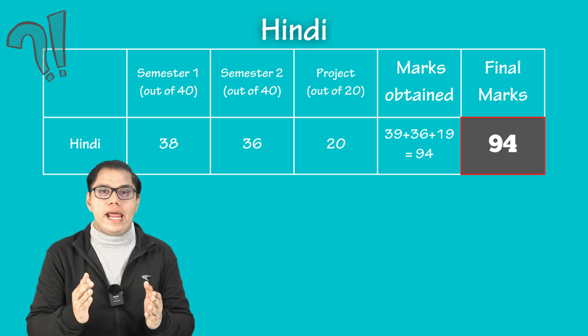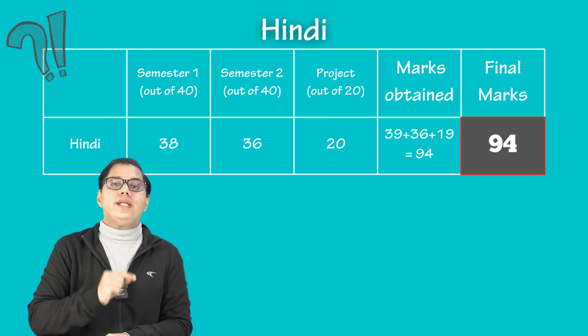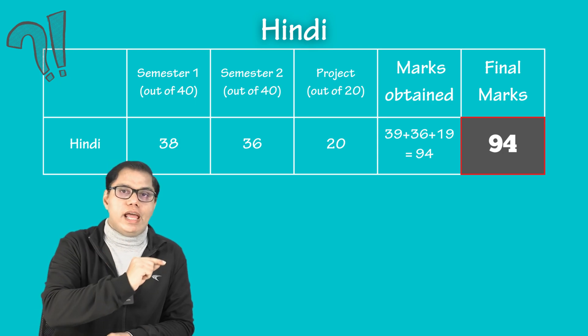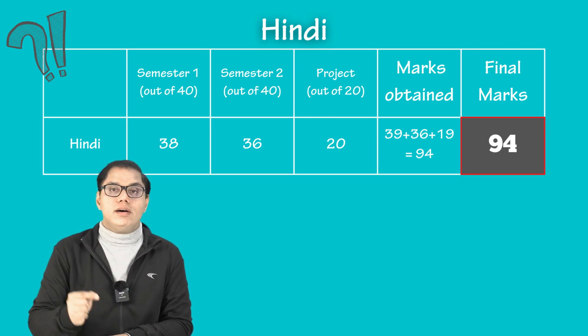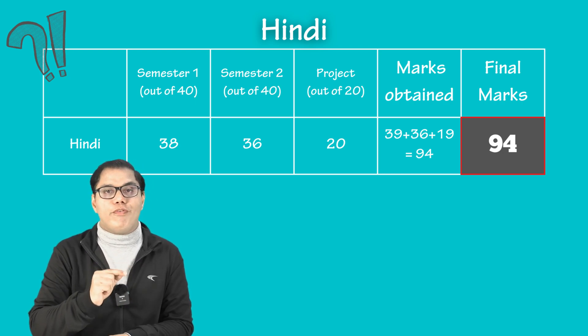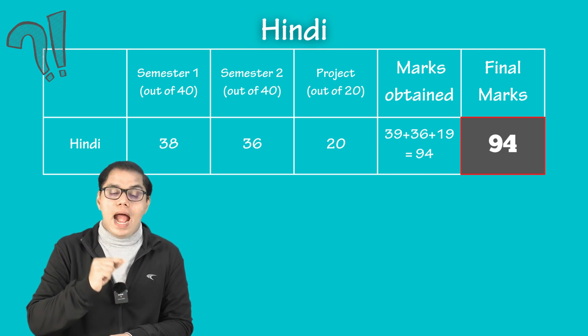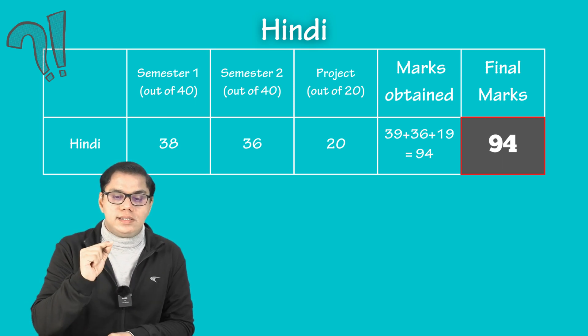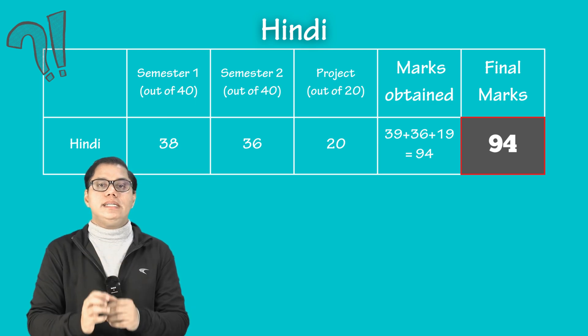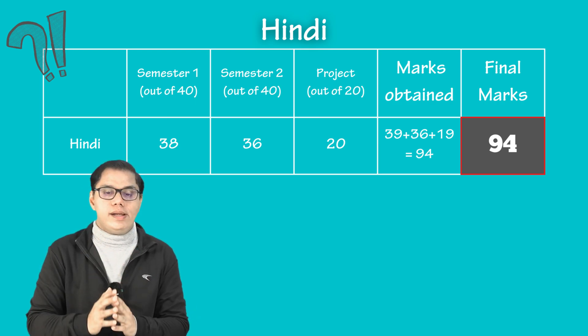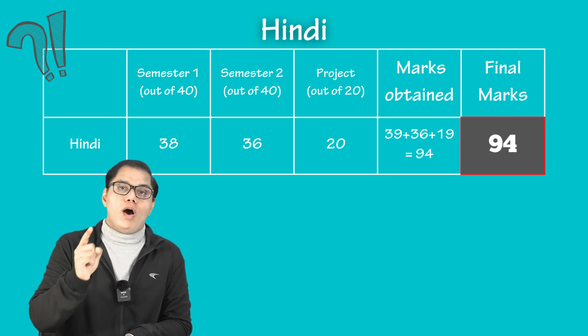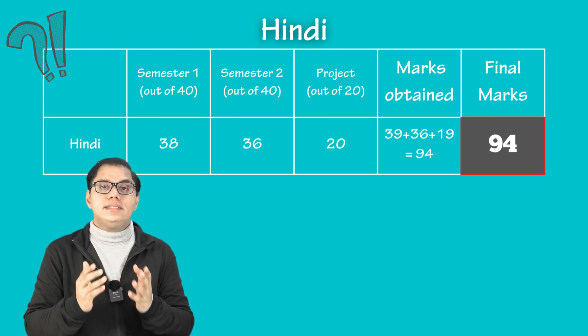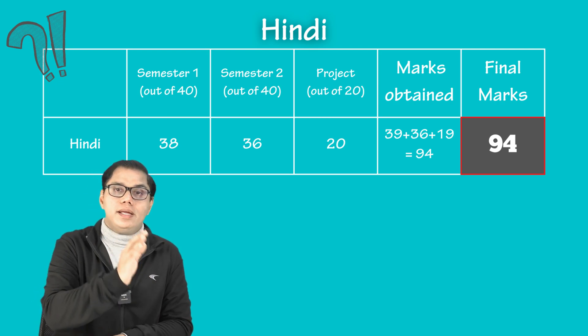Let us move on to next subject that is Hindi which is a stand alone subject. And we will assume that a student has scored 38 marks out of 40 in semester one. And in semester two, he has scored 36 marks. And in project work, teacher has given him 20 on 20. So his total for Hindi is 94 and this 94 is the final marks for Hindi.